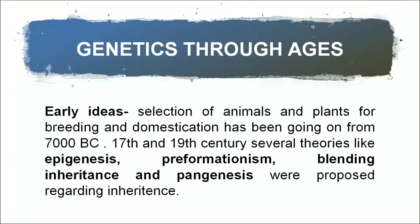In early ideas, since the time of 7000 to 8000 BC, people were selecting animals and plants. Plants and animals were selected based on desired characters like high milk producing and high yielding varieties, for domestication or cultivation. Various theories were also proposed like epigenesis, preformationism, blending inheritance, and pangenesis.